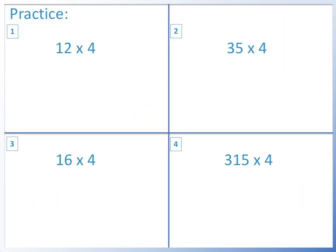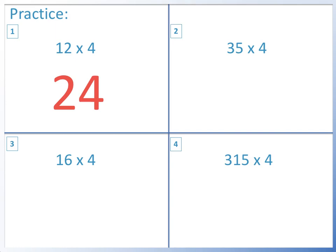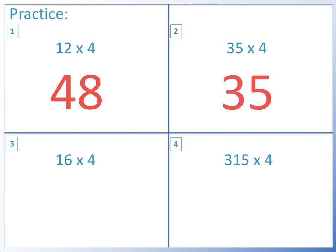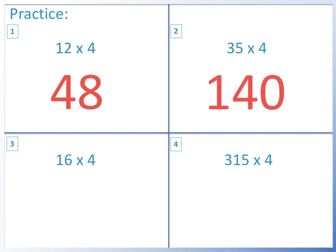Here are some practice questions for you to try. Please pause the video and have a go. Question 1: 12 times 4. Double it equals 24. Double it again equals 48. Question 2: 35 times 4. Double it equals 70. Double it again equals 140.